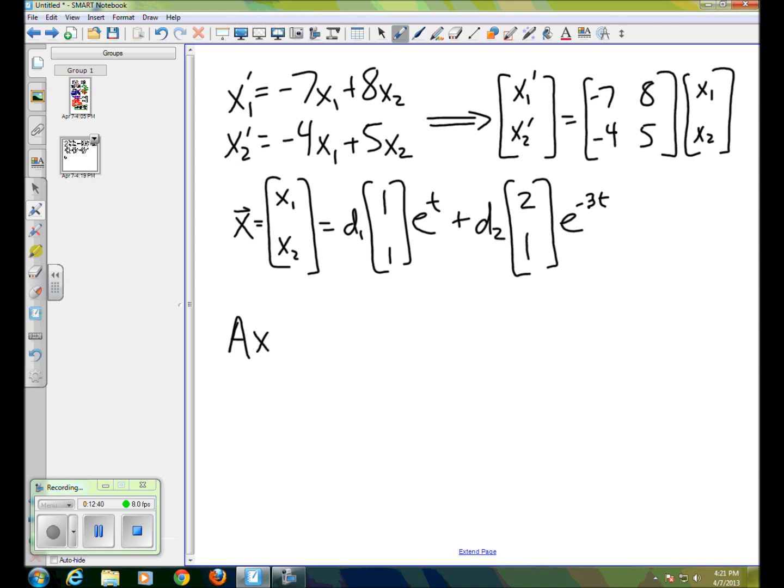So Ax is equal to the matrix A, and I'm just going to write this, times d1, 1, 1, e to the t, plus d2 times 2, 1, e to the minus 3t.